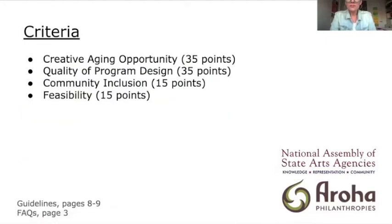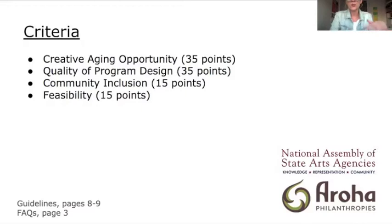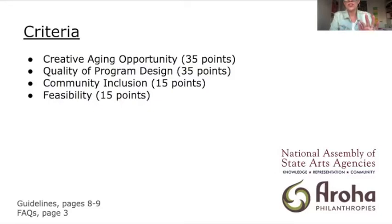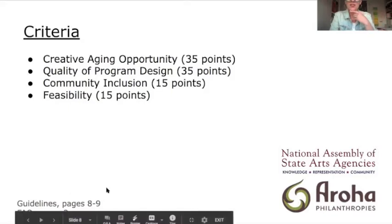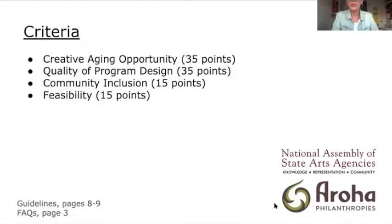The criteria are outlined in detail on guidelines pages eight to nine. There are four criteria that applications will be adjudicated according to: Creative Aging Opportunity (35 points); quality of your program design (35 points); Community Inclusion (15 points); and feasibility of your project (15 points). The big-picture creative aging opportunity in your state and the quality of your program design — meaning how those creative aging best practices are layered into your program design — are really where the weight of the scoring points will come from.